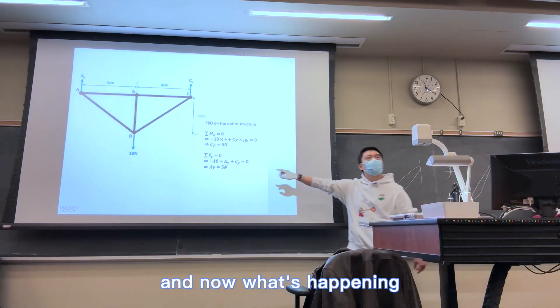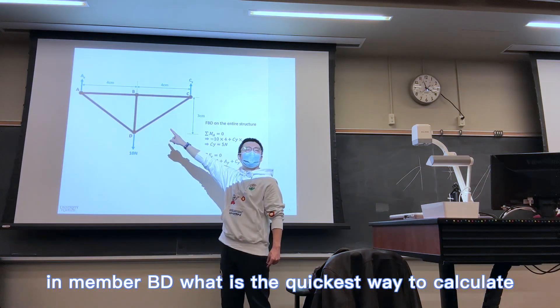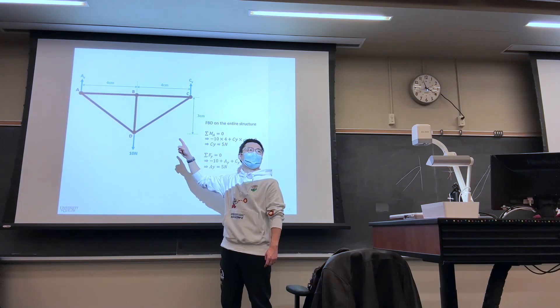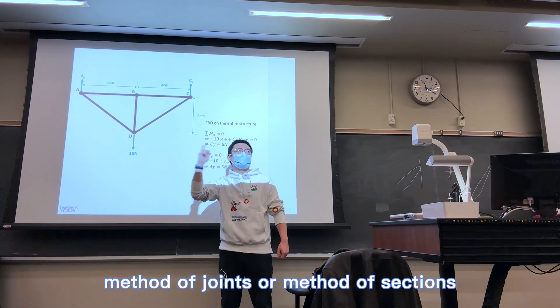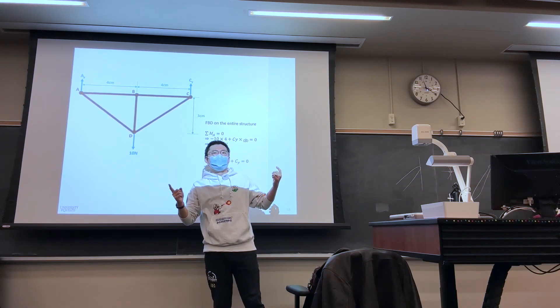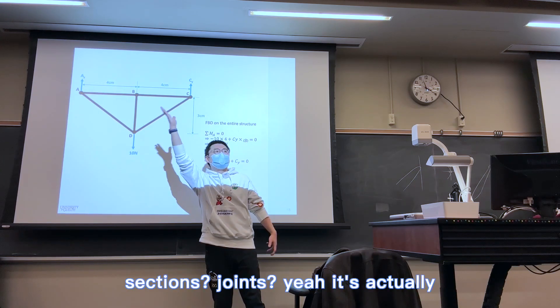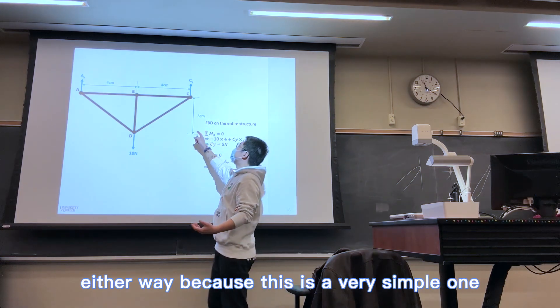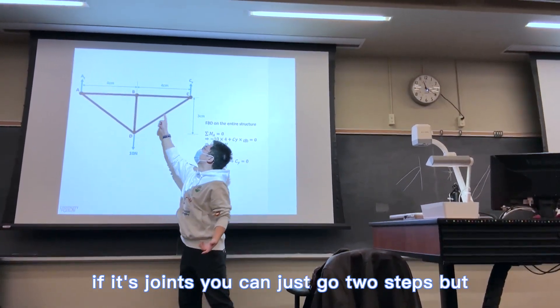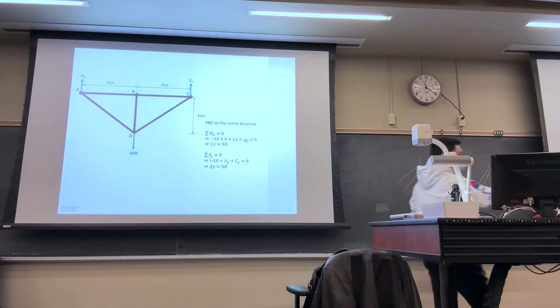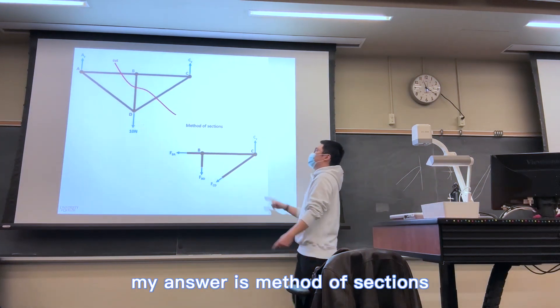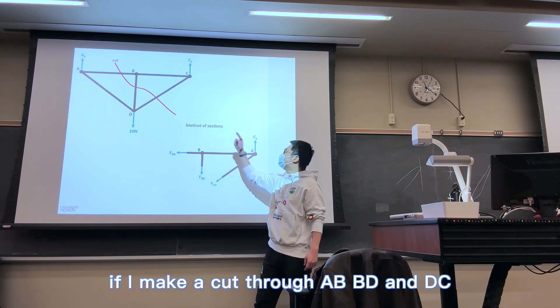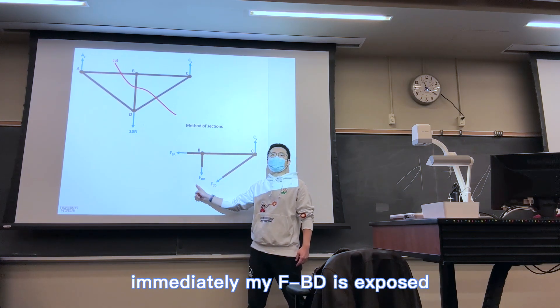And now, what's happening in member BD? What is the quickest way to calculate a force in a member if I know which member I'm looking for? Method of joints or method of sections? Sections? Joints? Yeah, it's actually either way, because this is a very simple one. If it's joints, you can just go two steps. But my answer is method of sections. If I make a cut through AB, BD, and DC, immediately my FBD is exposed.